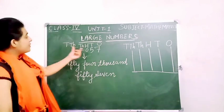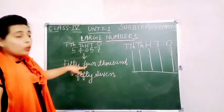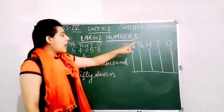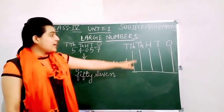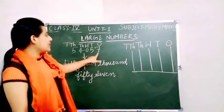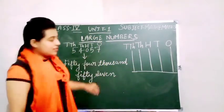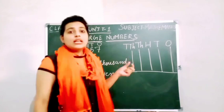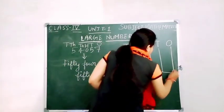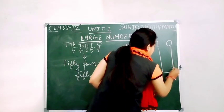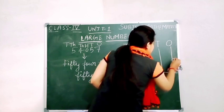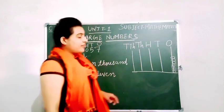Now we will represent this number on the abacus. In the 1's place how many numbers? 7. So we will draw 7 beads: 1, 2, 3, 4, 5, 6, and 7.